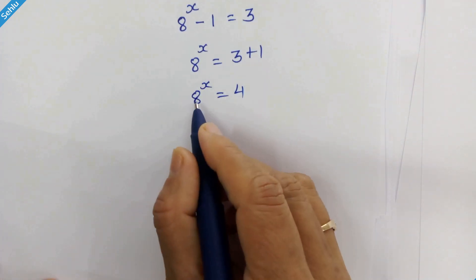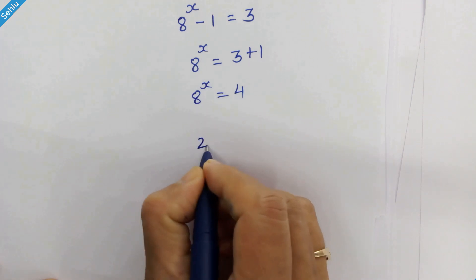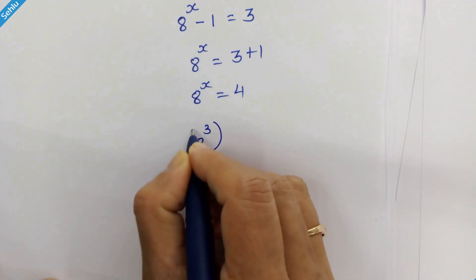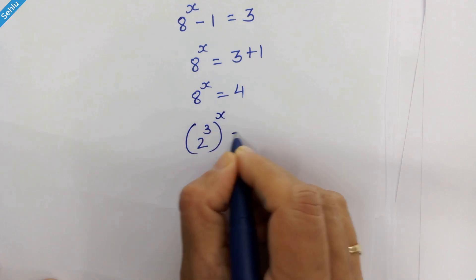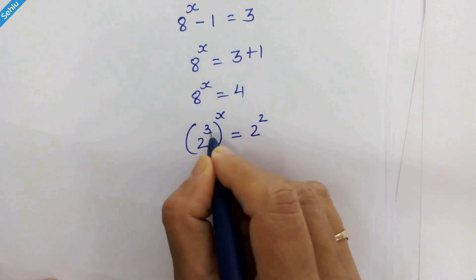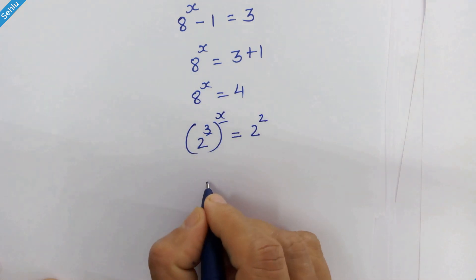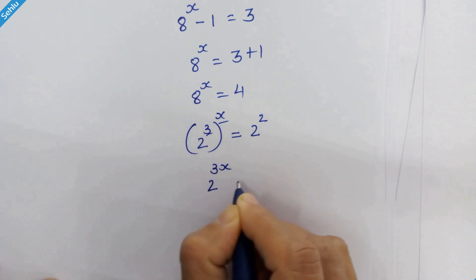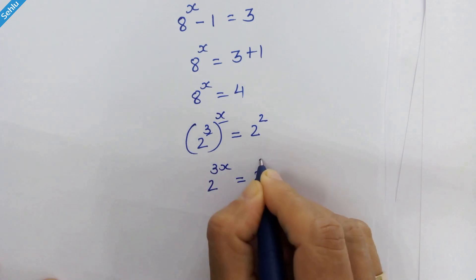8 is 2 cubed and 4 is 2 square. So we can write like 2 cubed whole raised to x is equal to 2 square. We can multiply these two. So we have 2 raised to 3x is equal to 2 square.